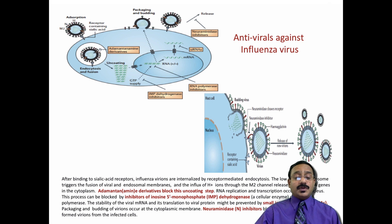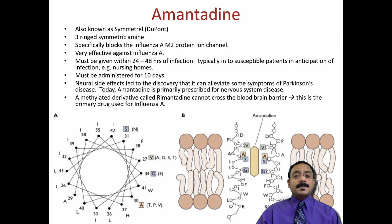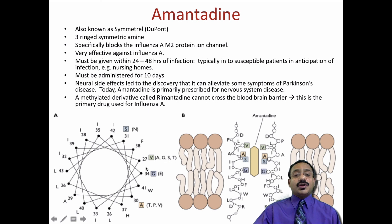After packaging, the budding of new virions from the cytoplasm can be blocked by neuraminidase inhibitors, which prevent the release of newly formed virions. These are the various methods by which influenza virus can be stopped. The first drug is amantadine - a proprietary drug also known as Symmetrel - with a three-ring symmetric amine structure that specifically blocks the M2 protein ion channel, stopping the uncoating of viral nucleic acid.